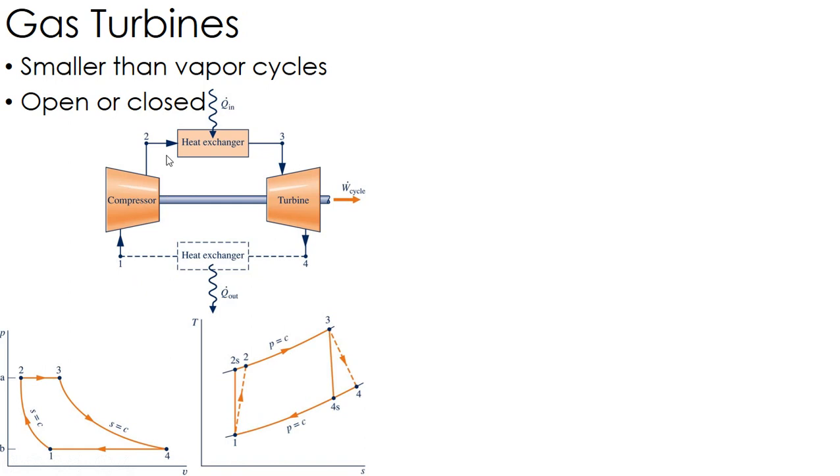We may have some irreversibilities we'll talk about in a second. This cycle that I've shown here is what we call the Brayton cycle. We're going to use an air standard analysis - that's the preferred method. We also have the less ideal cold air standard where we make the assumption of constant specific heat, which I'm not super happy with.